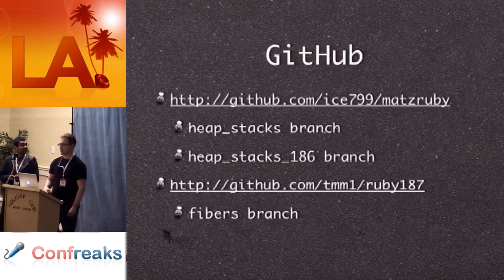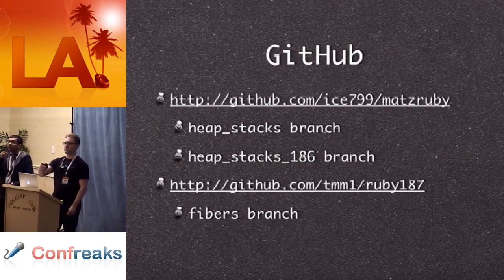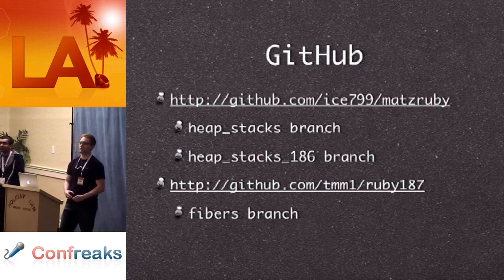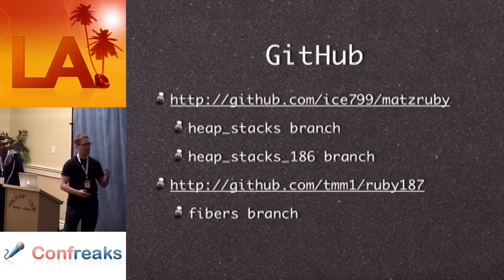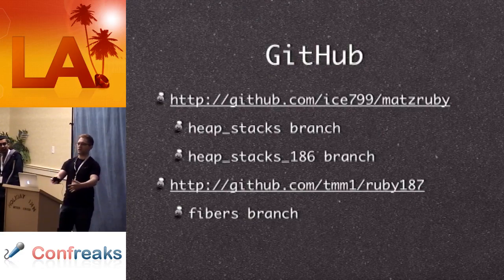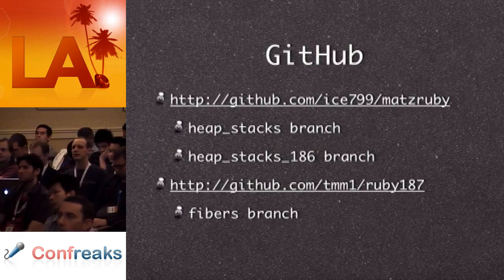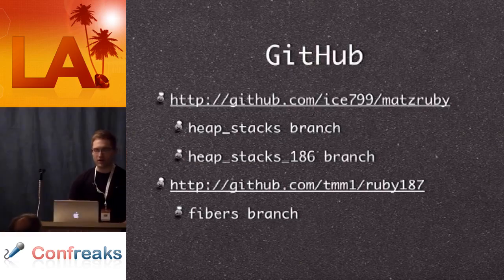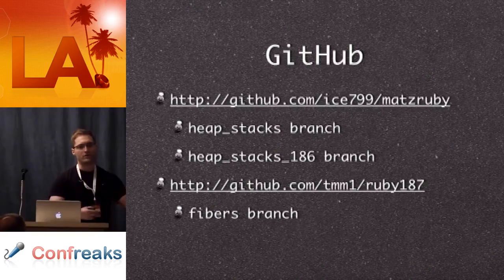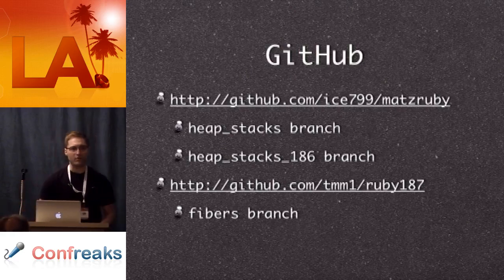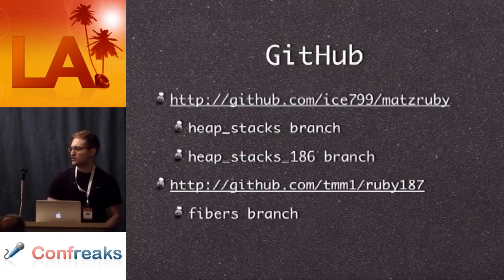Q&A: On 1.9 — like we said at the beginning, 1.9 uses a different threading implementation, so these patches don't apply to 1.9. As for getting this stuff back-ported to 1.8 mainline, the answer right now is no. The reason is several-fold: our code is platform specific — we only support 32-bit and 64-bit x86 and x86_64. Ruby supports lots of other platforms like the 68k and all kinds of weird CPUs. Ruby is a lot about portability, and we're not going to write instructions for all those architectures.